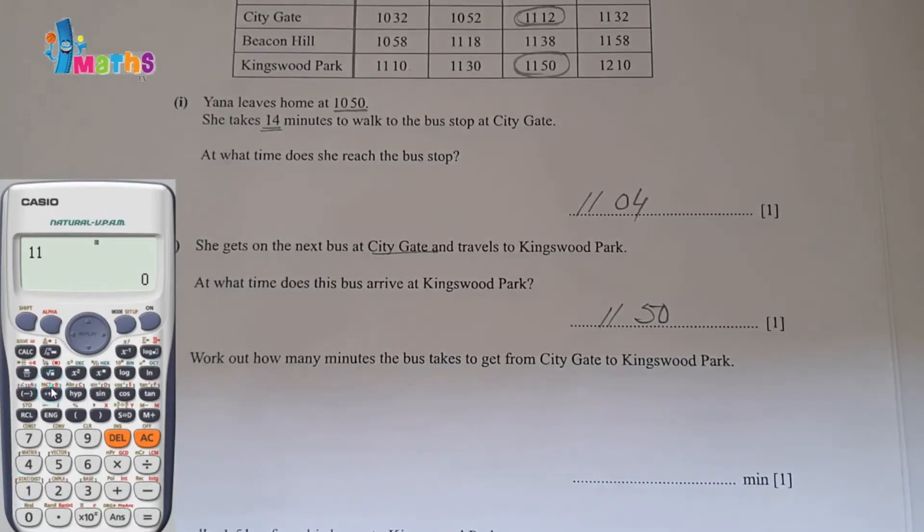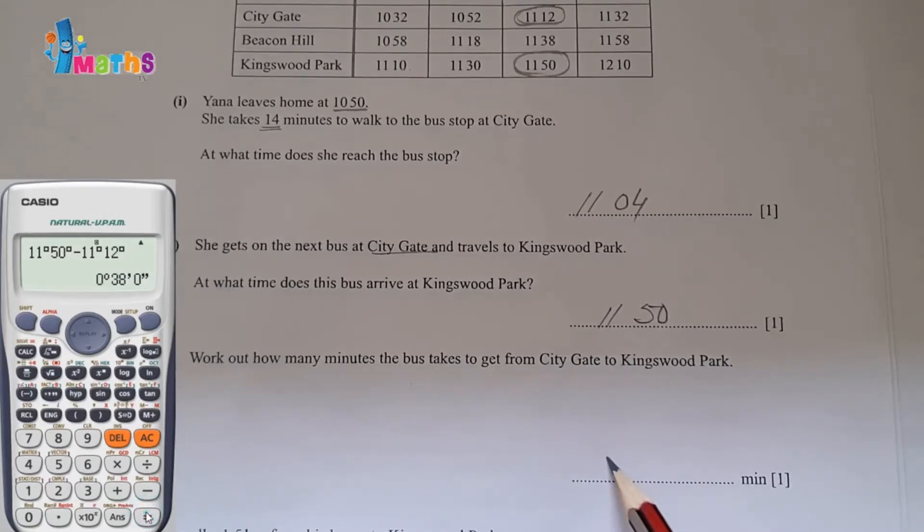So 11 hours and 50 minutes minus 11 hours and 12 minutes. When we subtract, we will get 0 hours and 38 minutes. So it will be 38 minutes.